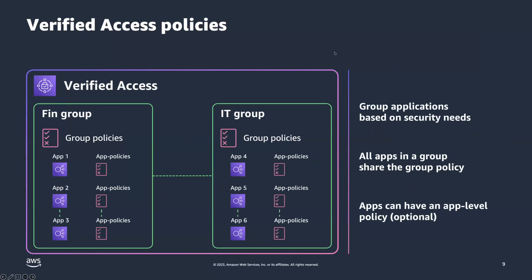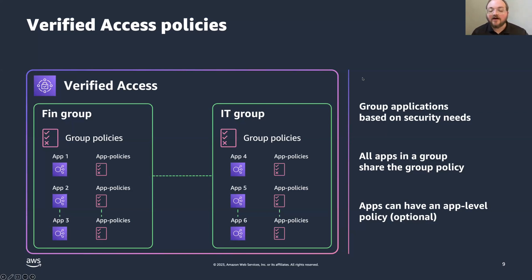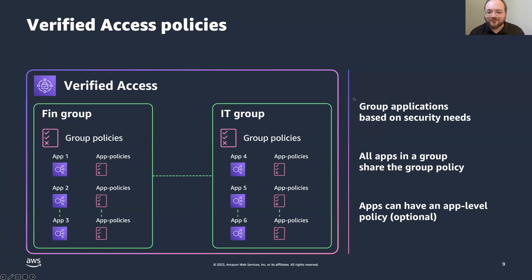We've got about two or three minutes left, so let me highlight the key points on policies. You can apply group policies to apply to all applications in a group. The IT team here, for example, has applications four, five, and six, and that group policy can apply to all of them. But if you want, you can attach policies at the application level for more granular control. A good starting point is to start with those group policies — write a group policy for your different teams and go from there to further restrict access as needed.